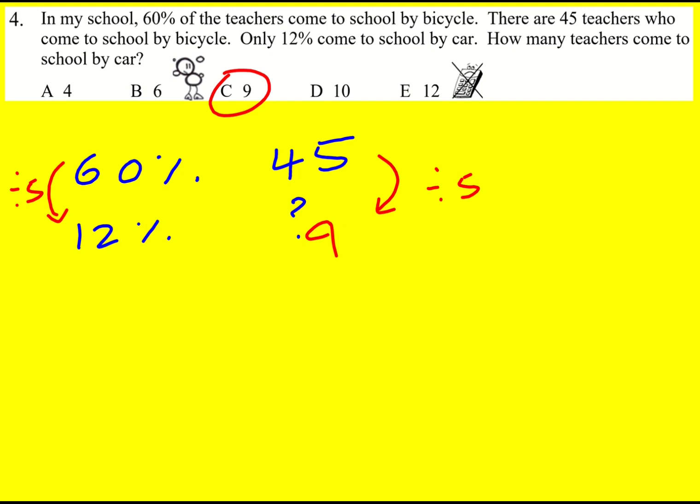You can set this up in other ways. If you recognize that it's one-fifth then you could just do one-fifth times 45, but it's the same approach as what I've done here.